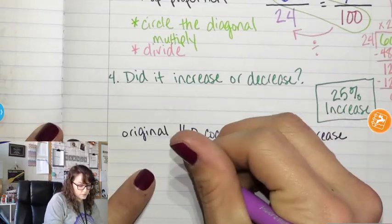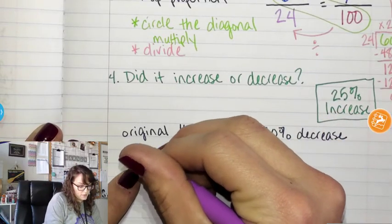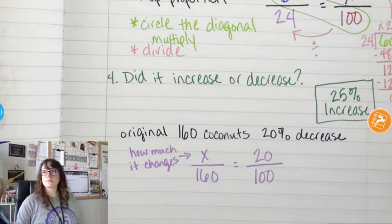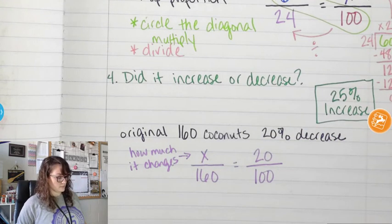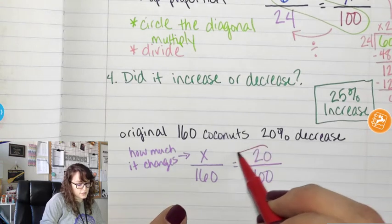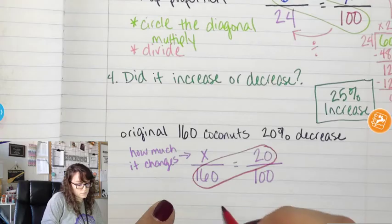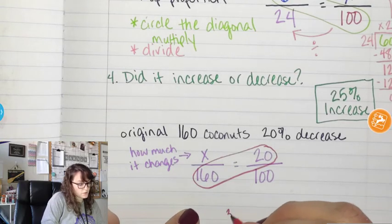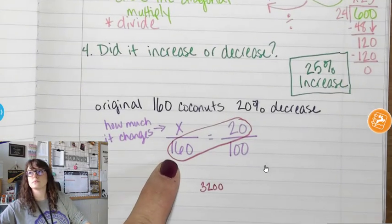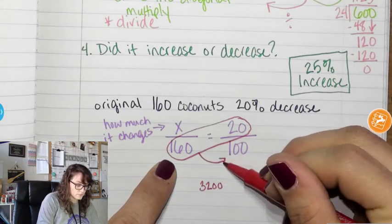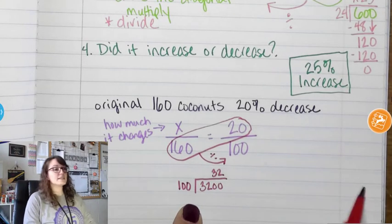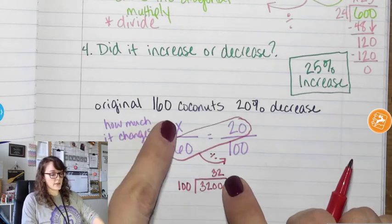We're looking for the change — that's what you're trying to figure out. We solve it the same way. What's 20 times 160? 3,200. So I multiply those two, then divide by 100. 3,200 divided by 100 is 32. Now this is not the answer — this 32 is how much it changes.